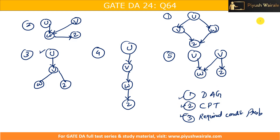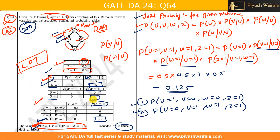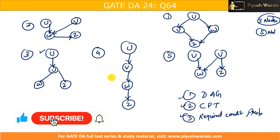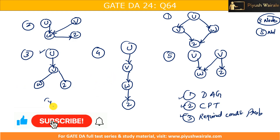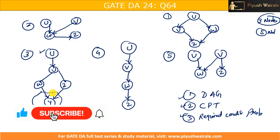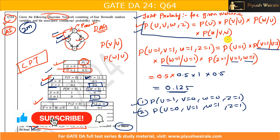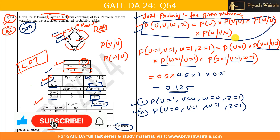We already discussed the scenario for three nodes — that is also possible. Even five nodes are possible if they provide all the necessary data. For example, they could add an extra node Y to the graph. They can simply change the DAG, CPT, and the required probability — and you can get many different questions from this topic.